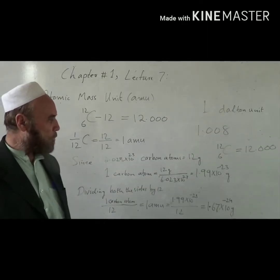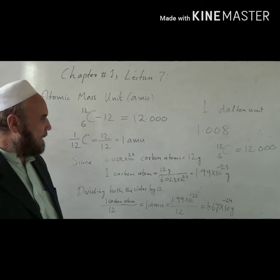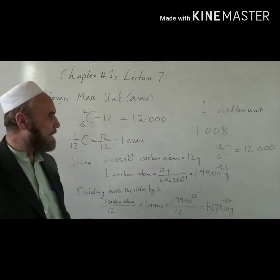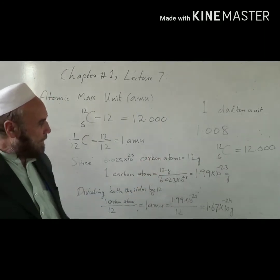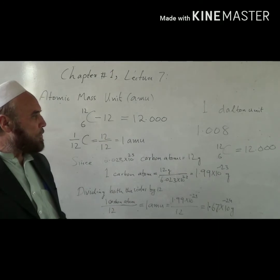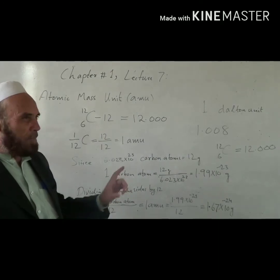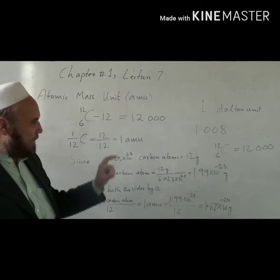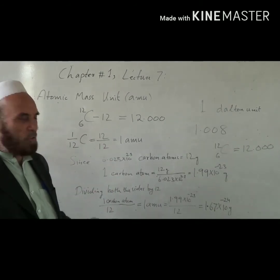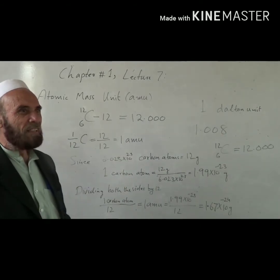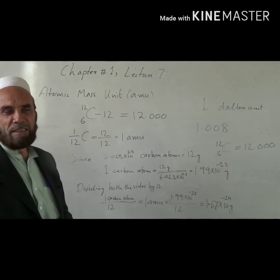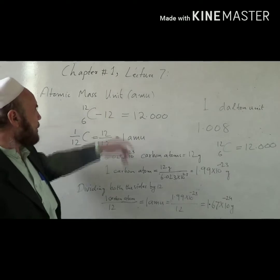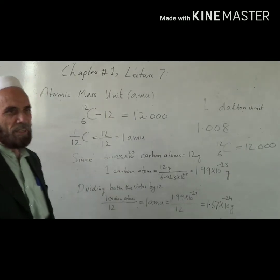Although carbon has three isotopes — carbon-12, carbon-13, and carbon-14 — and the average weight differs slightly, it is specifically the mass of the carbon-12 isotope, which is 12.00, when the carbon is in its ground state and free — not combined in a compound. This standard was called the atomic mass unit, abbreviated as AMU.